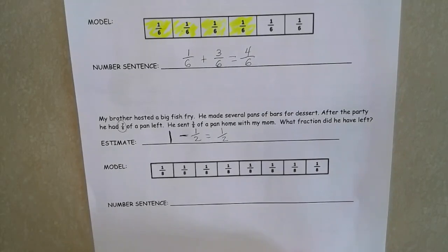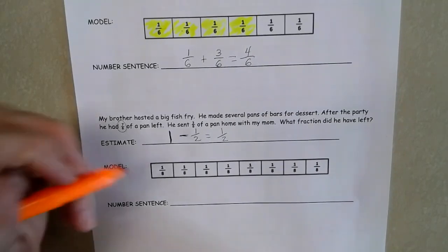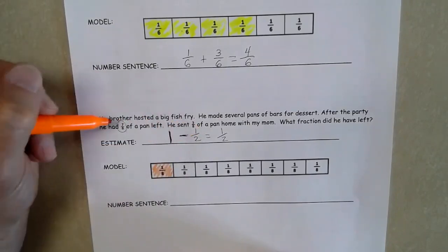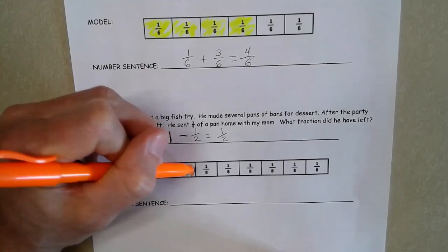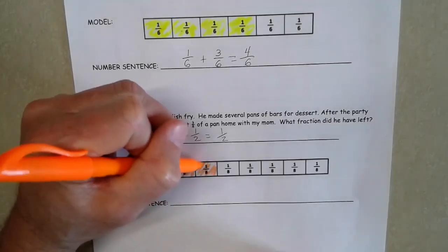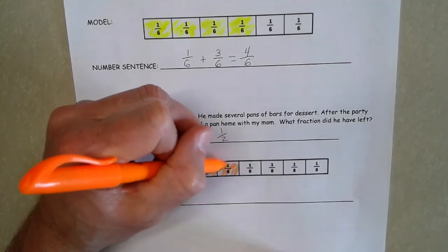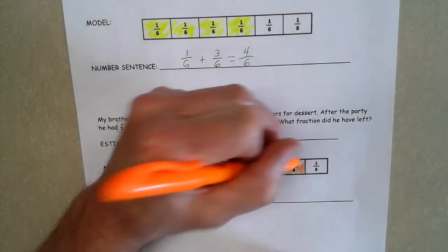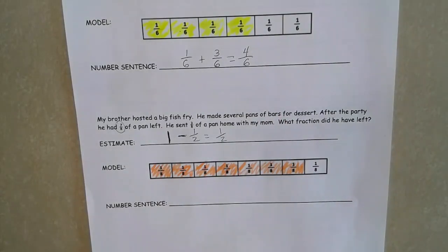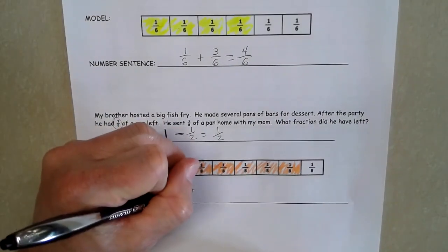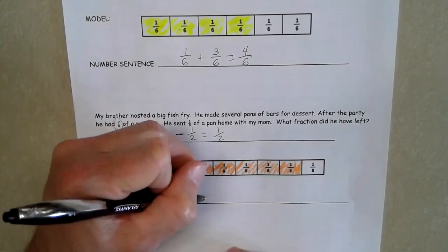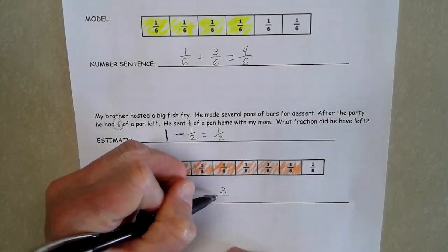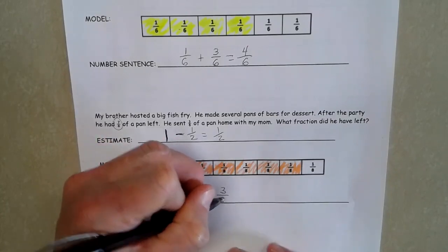So to model this subtraction, I have seven eighths, or my brother, I should say, had seven eighths of the pan of bars. So I'm going to shade in that seven eighths. So we had seven eighths as a fraction. And we are subtracting the three eighths that mom took home with her.